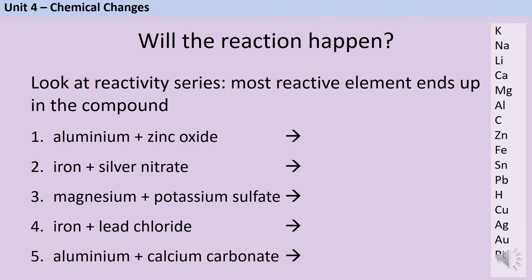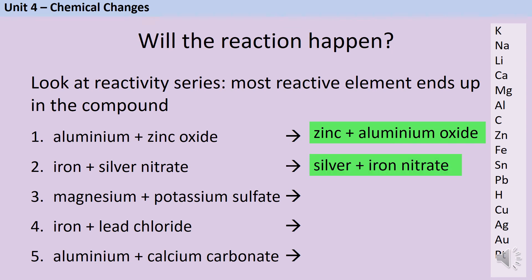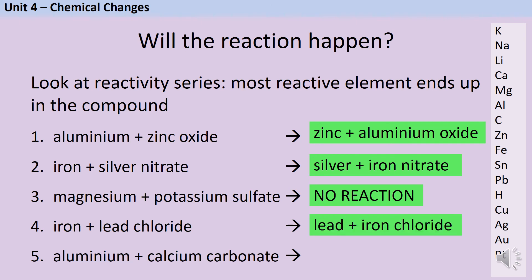In question one, we have aluminium and zinc — aluminium is higher up the reactivity series so this displacement reaction will happen, producing zinc and aluminium oxide. Iron is higher up than silver, so that reaction will happen too. Magnesium is less reactive than potassium, so it's unable to displace it and we won't see a reaction. Iron is higher up the reactivity series than lead, so that reaction will also happen. And aluminium is below calcium, so it's unable to displace it and there will be no reaction.